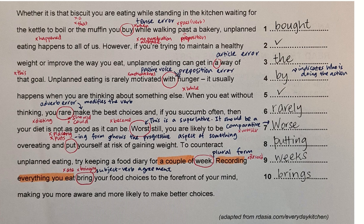One common error students picked out was 'past': students wrote P-A-S-S, but P-A-S-S is actually a verb, while P-A-S-T is a preposition. Next line: 'Unplanned eating happens to all of us.' Students who wrote 'happened' as the answer are inaccurate because this is a factual text, so it should be in simple present tense.